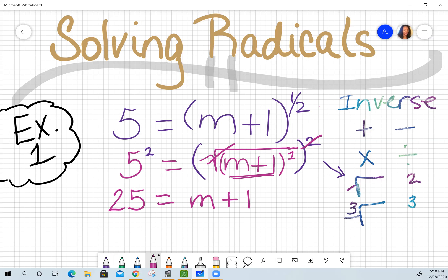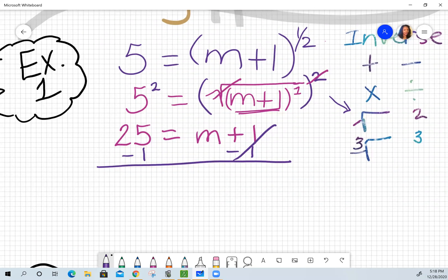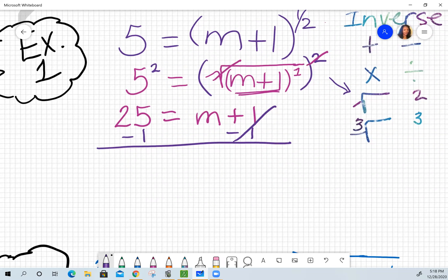Now you just want to solve for the variable m. You're going to subtract 1 on both sides, which gets rid of that 1, the constant on the right-hand side. Once you simplify, you have m is equal to 24. Or you can flip it around. It means the same thing. 24 equals m is the same as m equals 24.